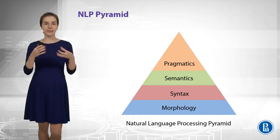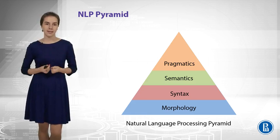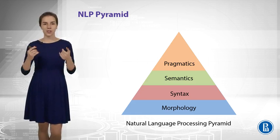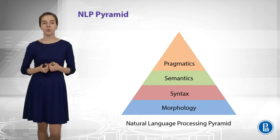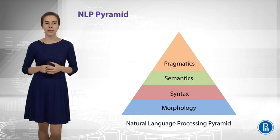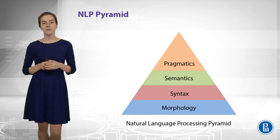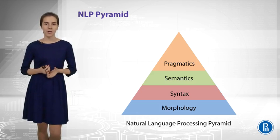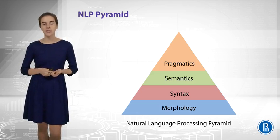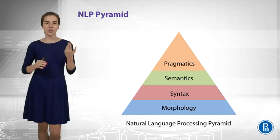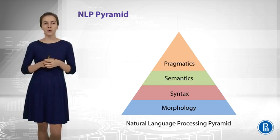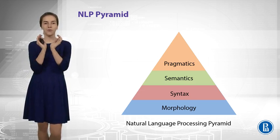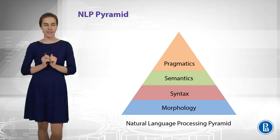Let us say that we are given some sentence. There are different stages of analysis for that sentence. The first stage, which is called the morphological stage, would be about different forms of words. For example, we care about part-of-speech tags, we care about different cases and genders and tenses. This is everything that goes just for single words in the sentence.